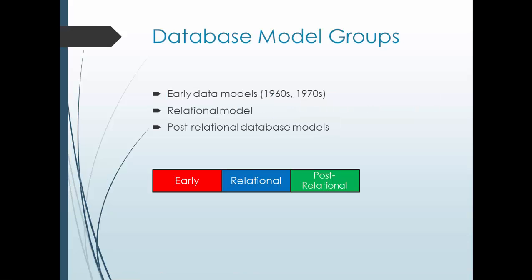Database models are broadly classified into three categories. First is called early data models, which were designed in the 1960s or 1970s. After the 1970s, relational models were designed. After relational models, in the current market, we have object-oriented models, also called post-relational database models. So the three categories are: early data model, relational data model, and post-relational database model.